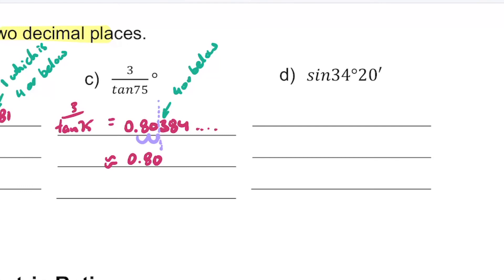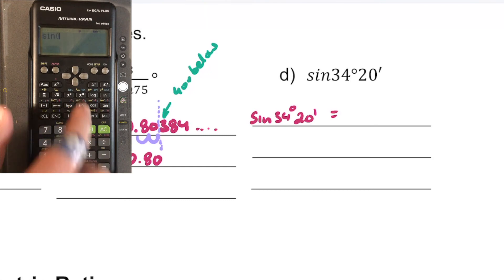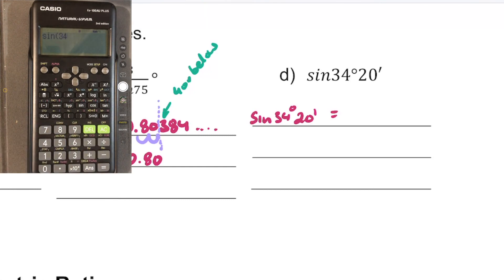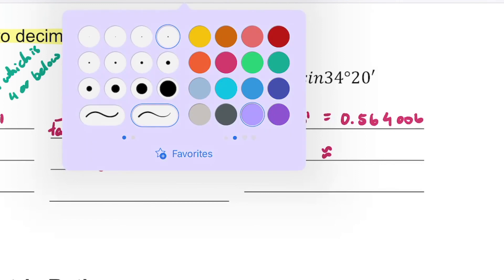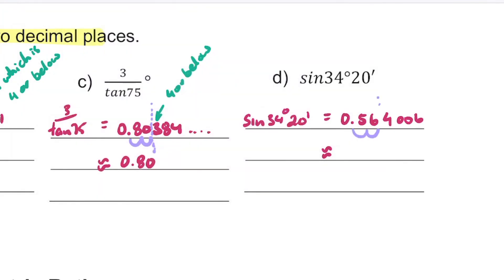We have one last problem to work on. This one is sine 34 degrees 20 minutes. We're going to do exactly the same thing and this time we're also going to include that degrees minutes seconds button that we spoke about earlier. Once we've done that, we've typed that straight into the calculator, we should get something looking a little bit like this.